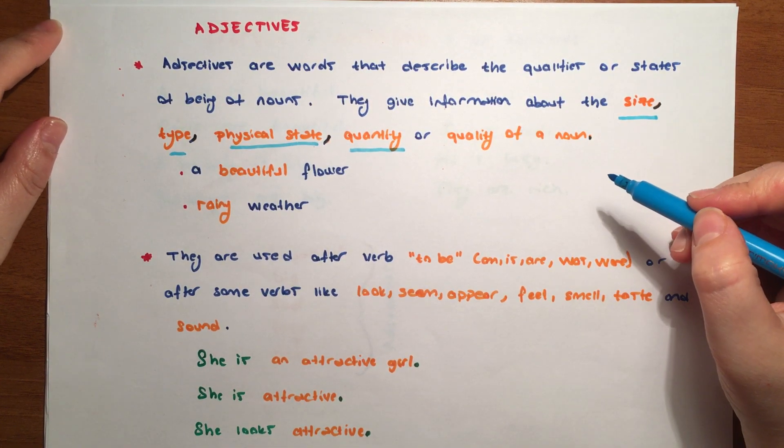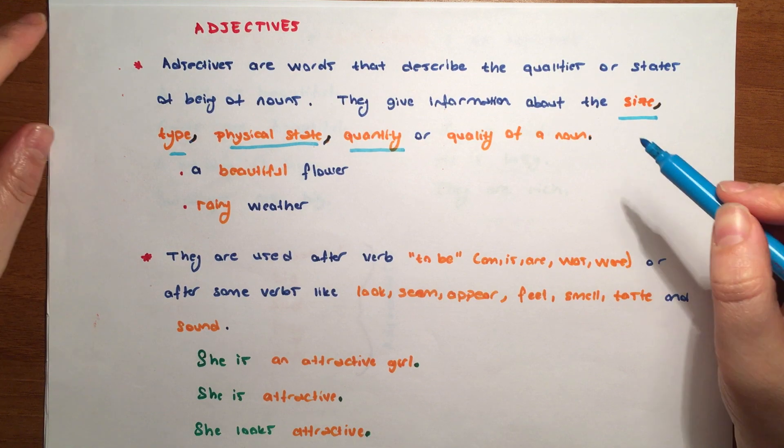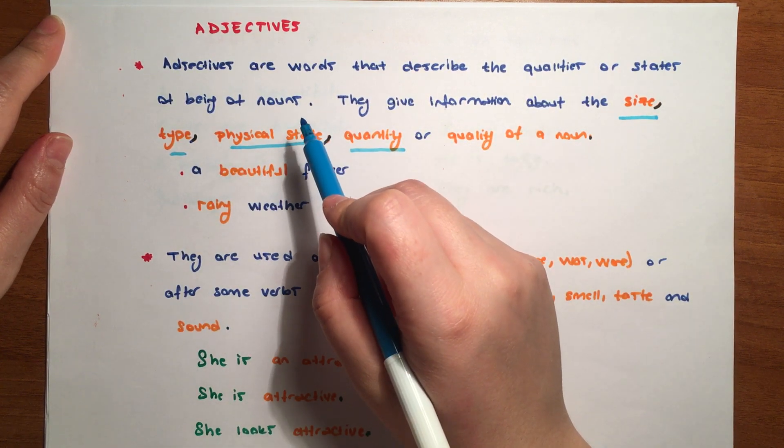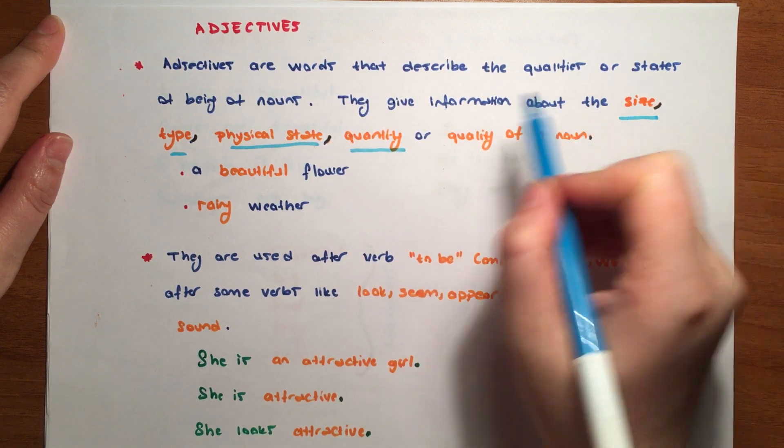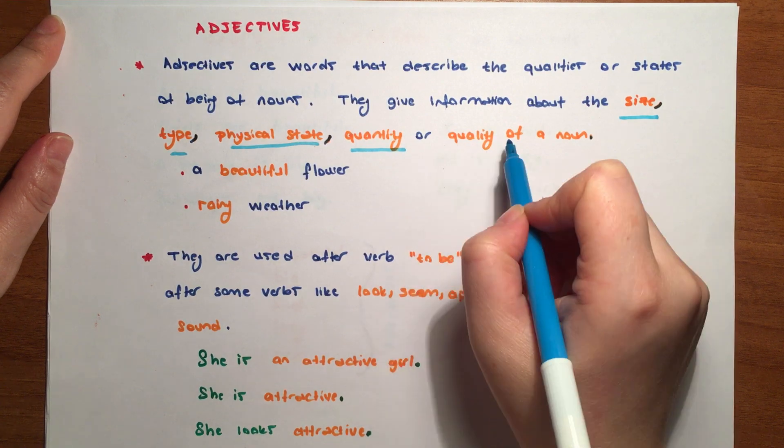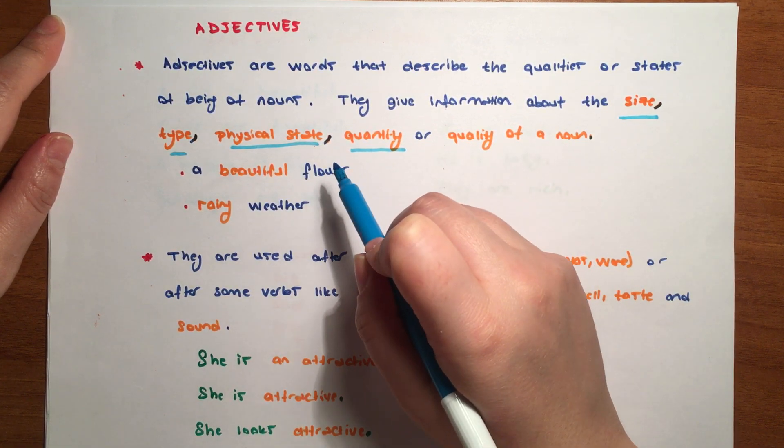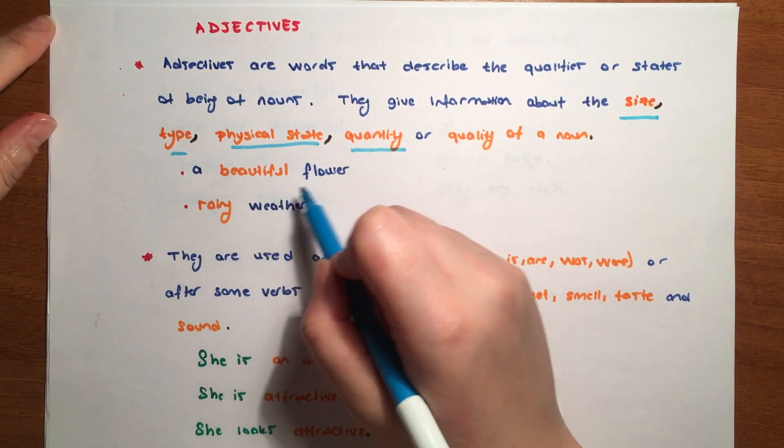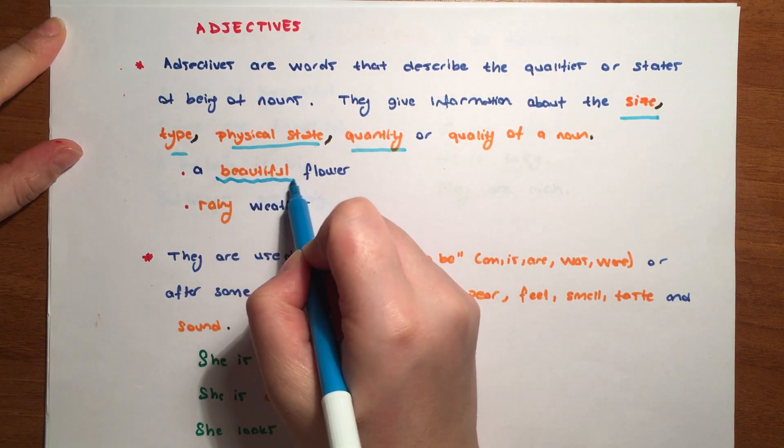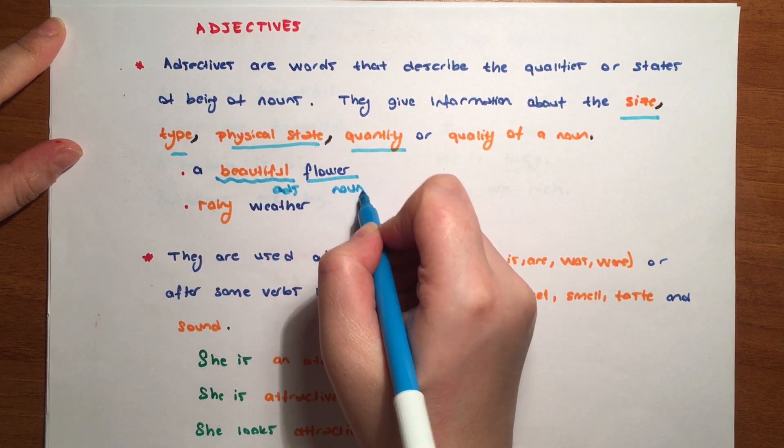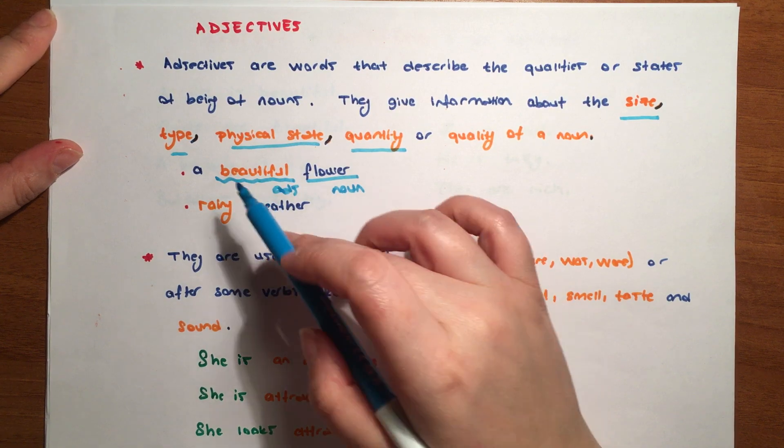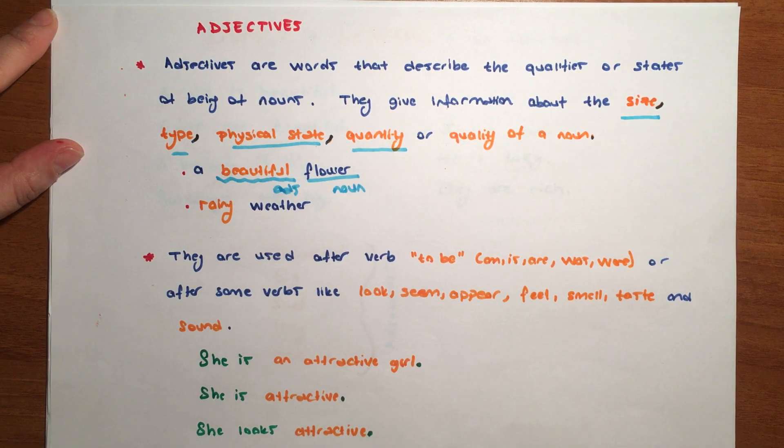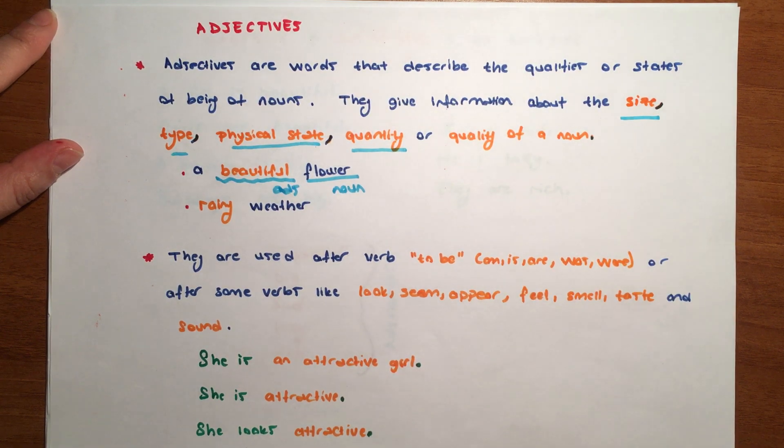Hi there, today we will learn adjectives. First, let's learn what adjective means. Adjectives are words that describe the quantities or states of being of nouns. They give information about the size, type, physical state, quality, or quantity of a noun. For example, a beautiful flower - beautiful is the adjective and flower is the noun. It gives information about the flower, telling us how it is.